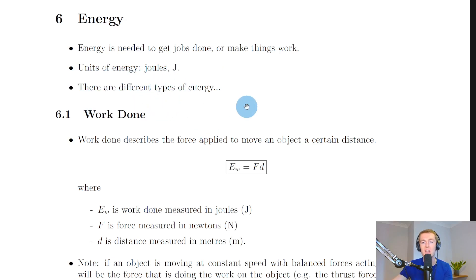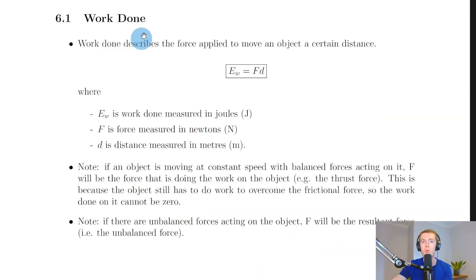Work done energy is the first type we're going to look at. Work done describes the force applied to move an object a certain distance.